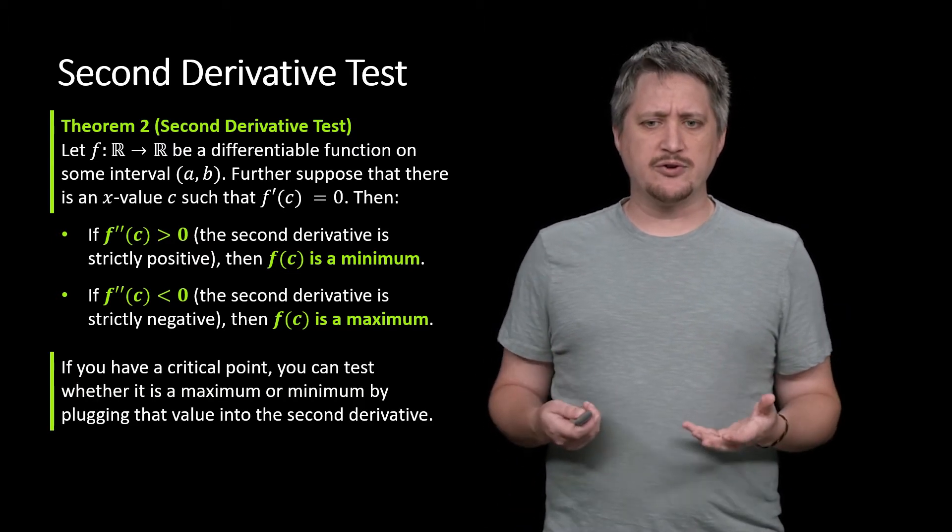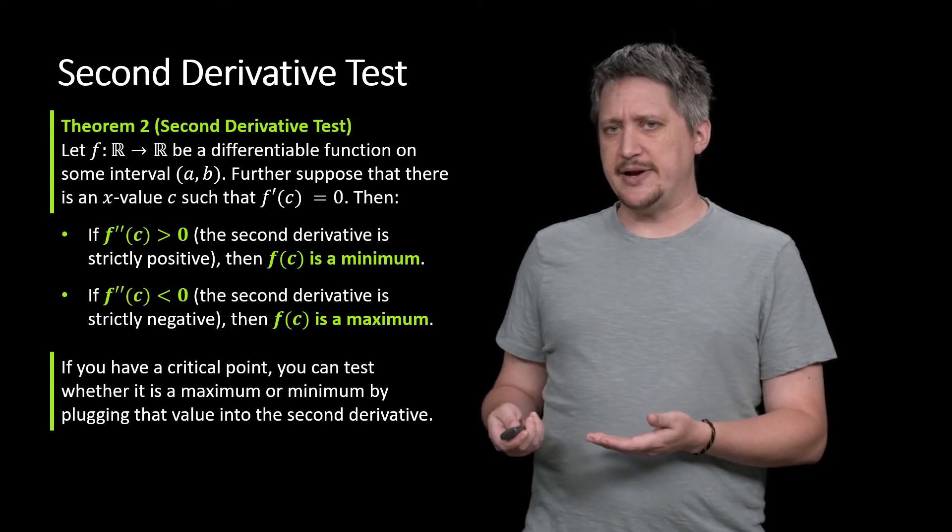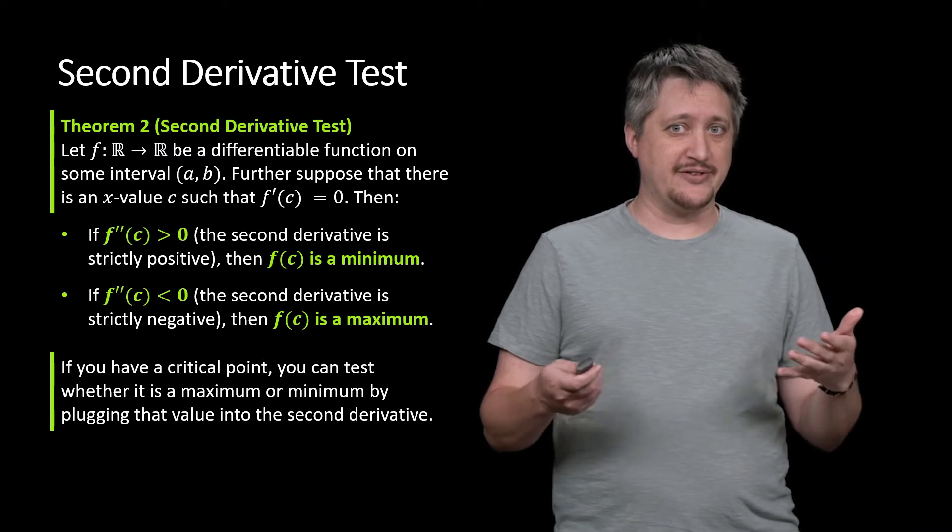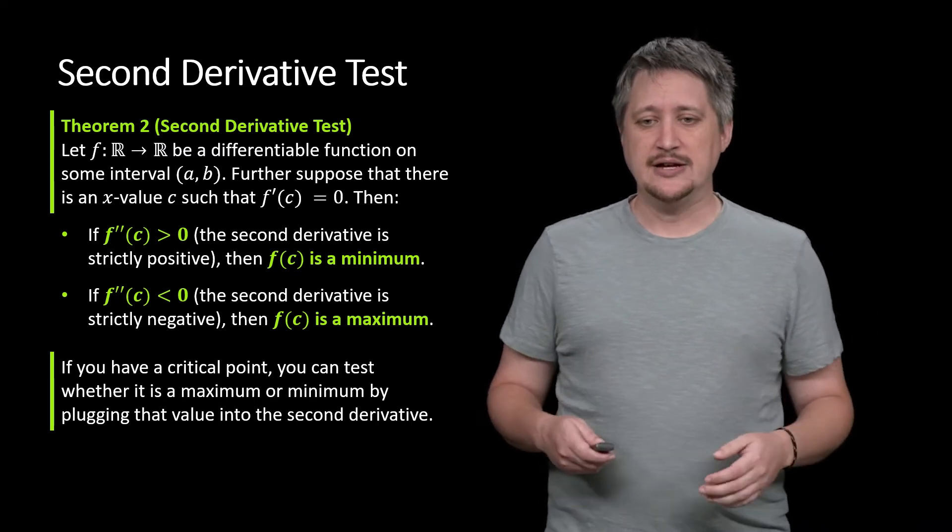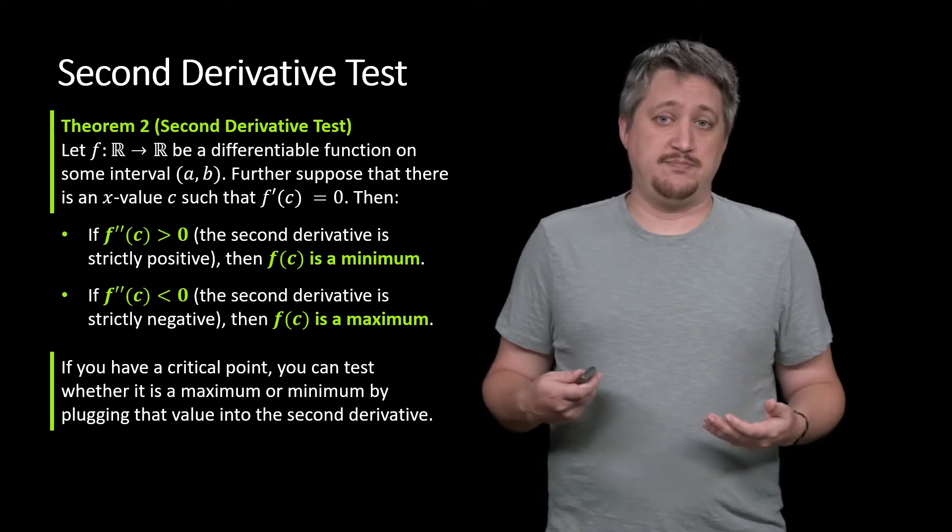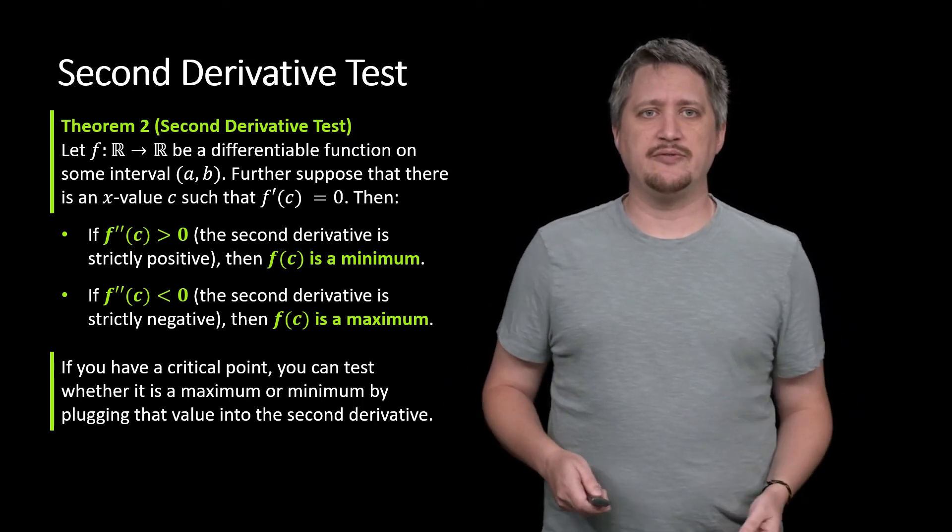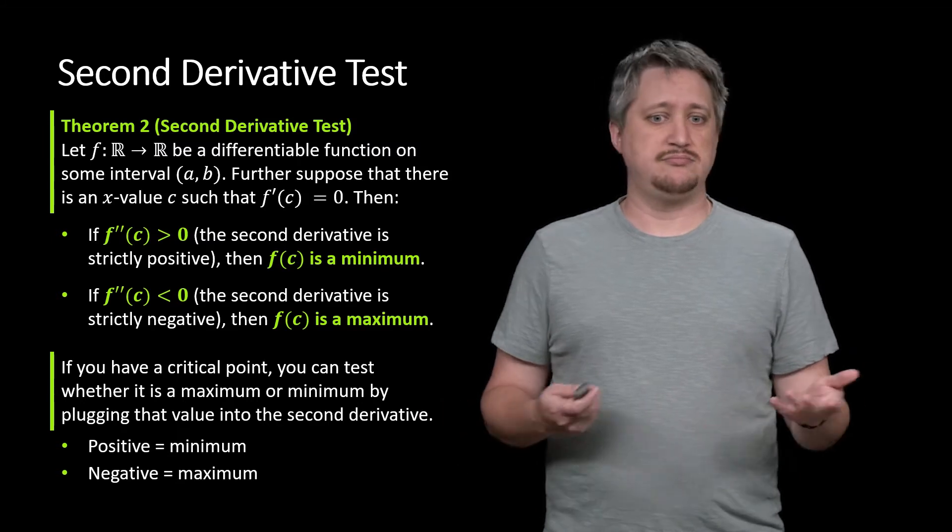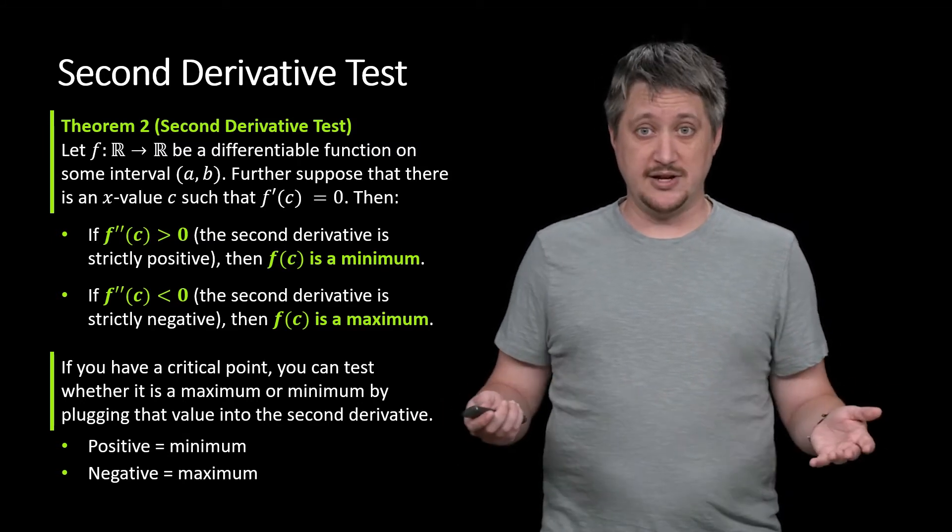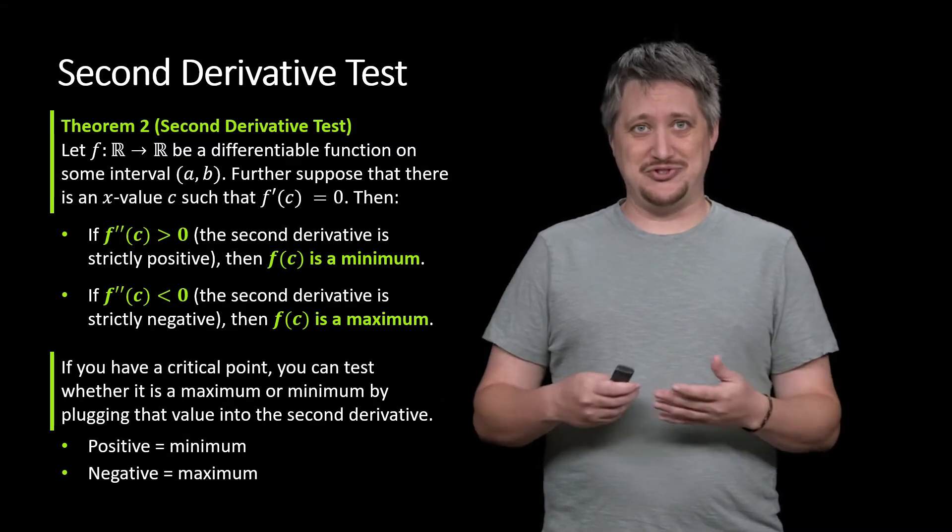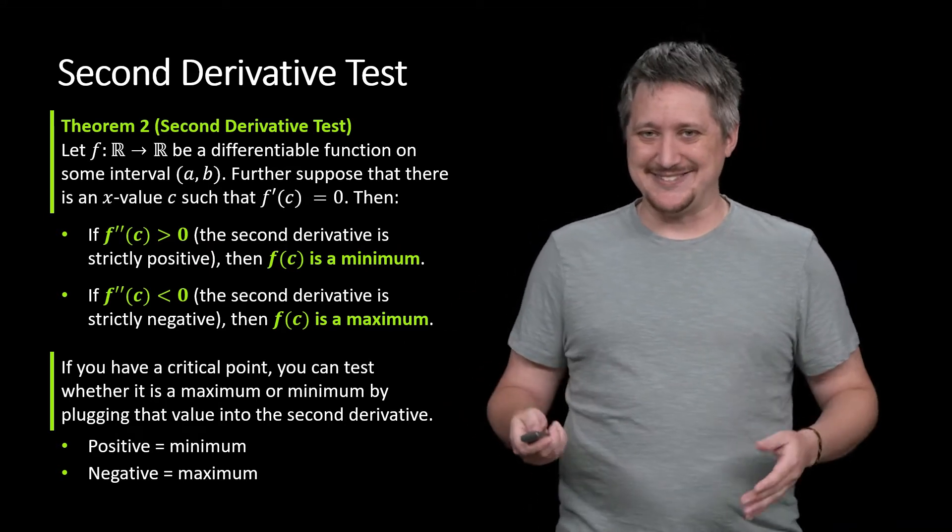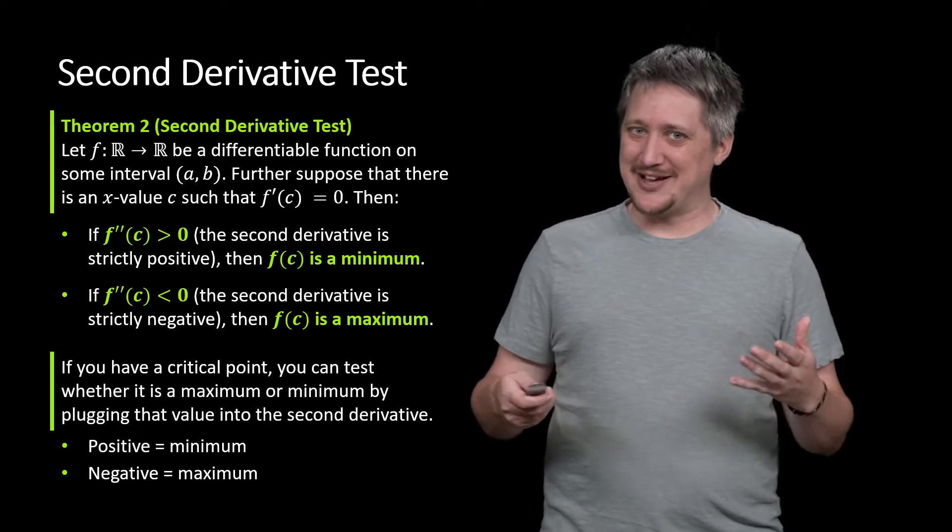So if you have a critical point, you can test whether it's a maximum or minimum, giving you whether or not it's an extrema for free in some sense, but you can test which type of extrema it is by plugging that value into the second derivative. Positive, it's a minimum. Negative, it's a maximum. It's quote unquote just that easy. Of course, nothing in math is quite just that easy. There are some caveats here.